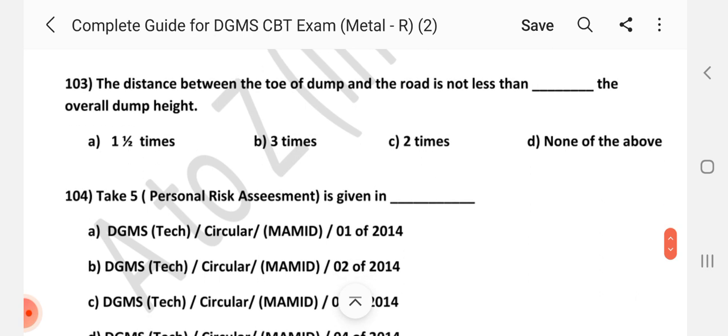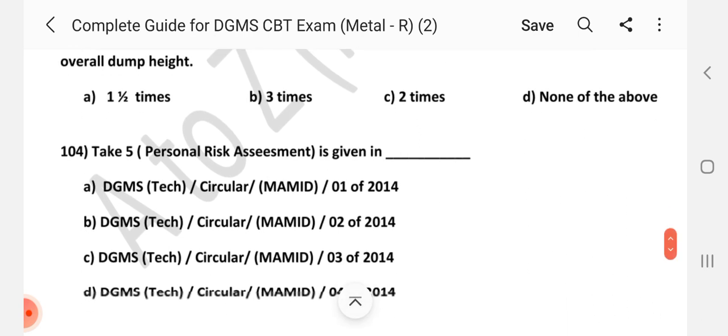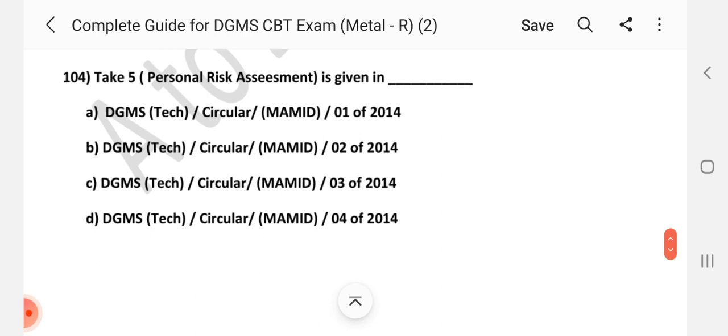Question number 103. The distance between the toe of dumps and the road is not less than dash the overall dump height. Answer is 2 times the overall dump height. Answer C. Question number 104. Take 5 personal risk assessment is given in dash. Answer is B, DGMS Tech Circular 2 of 2014.